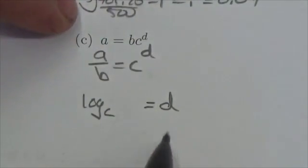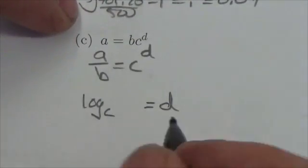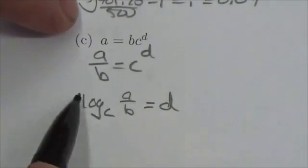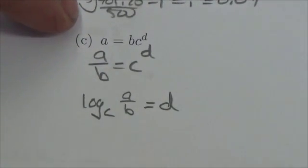So whatever the exponent was in that power, and whatever the power is equal to, that becomes the argument of the logarithm. So log base c of a over b equals d.